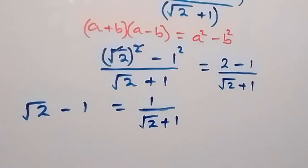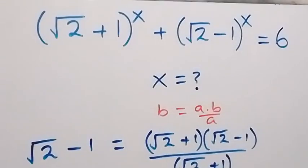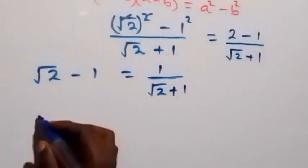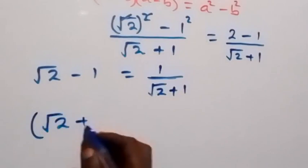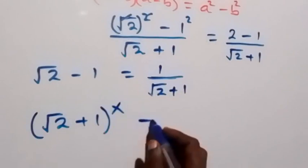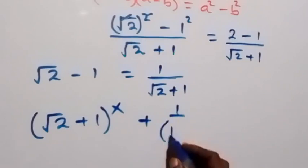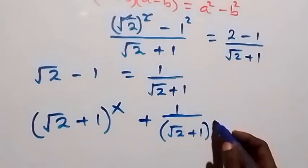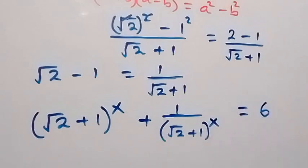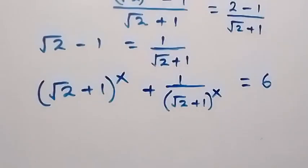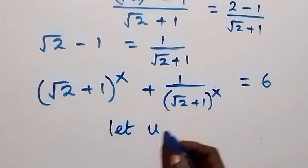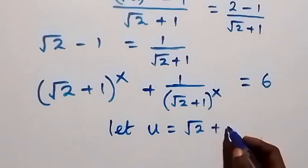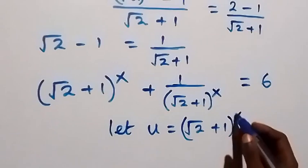Then, from what is given in the question here, we can write this now as 1 over root 2 plus 1. That implies the equation becomes into bracket root 2 plus 1, raised to power x, plus 1 over into bracket root 2 plus 1 raised to power x, which is equal to 6. From what we have here, we have root 2 plus 1 raised to power x common, so let the letter u be equal to root 2 plus 1 raised to power x.